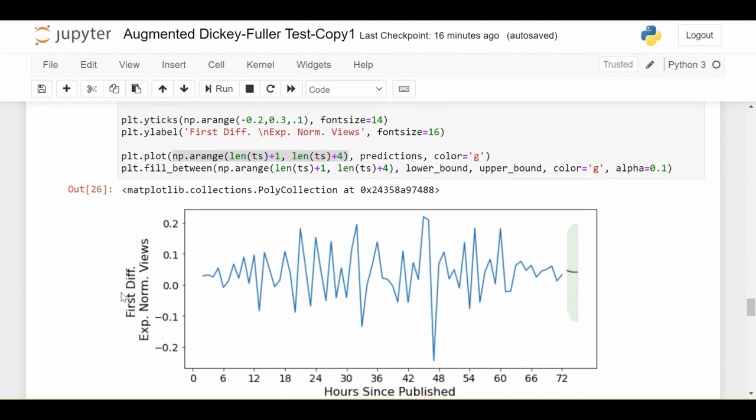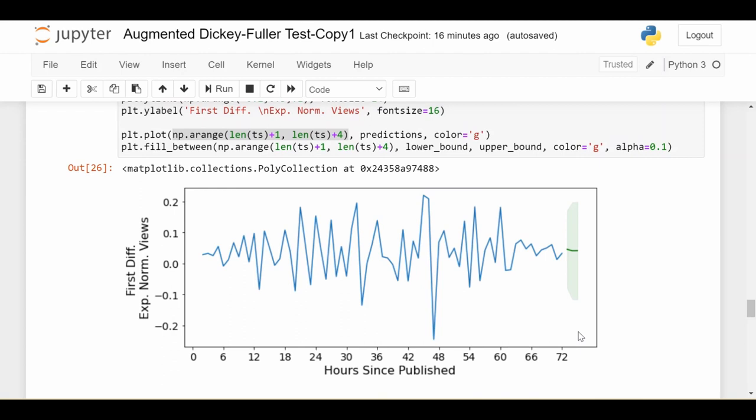What you're looking at is the first difference, exponentiated, normalized views. Lots of transformations that have been applied. We predict the next 3 hours of the time series, and these bands are the upper and lower confidence limits. In previous videos I've usually stopped here, but I left out a key fact.